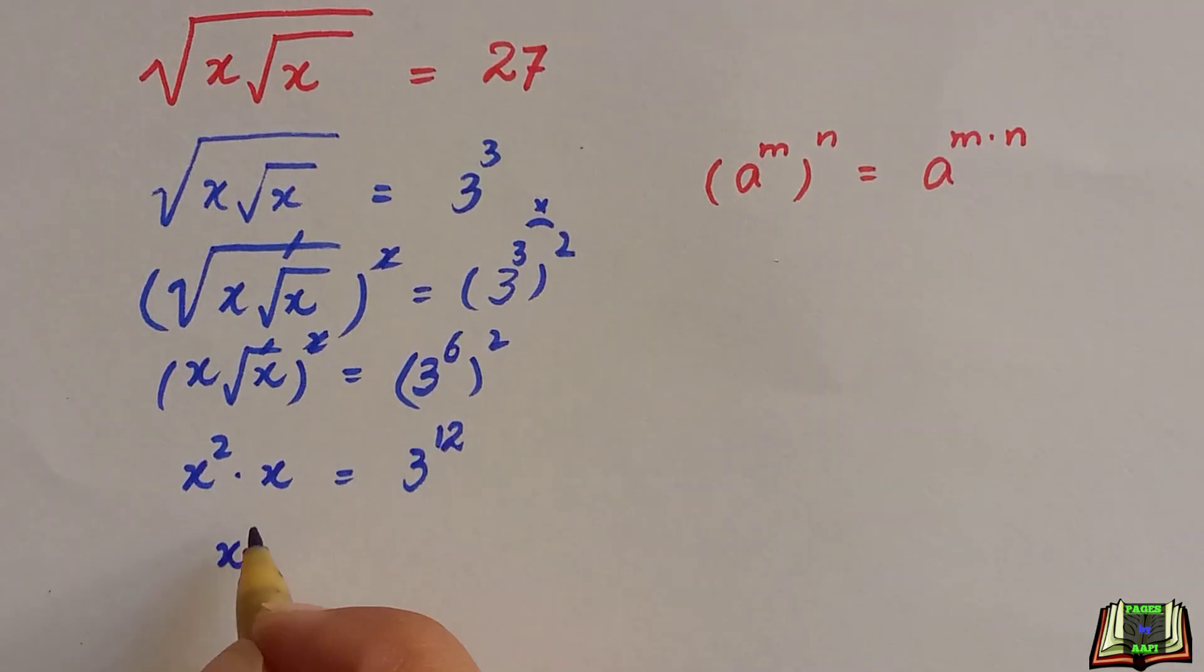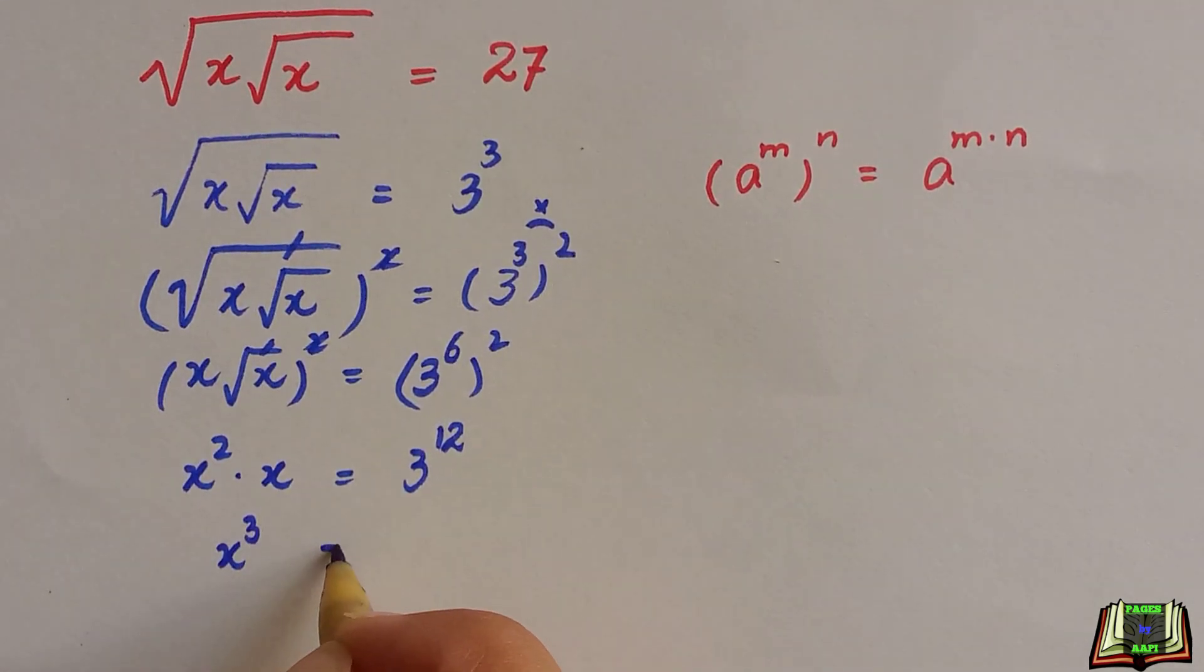To multiply these two like terms, we are going to add the powers. x raised to power 3 is equal to 3 raised to power 12.